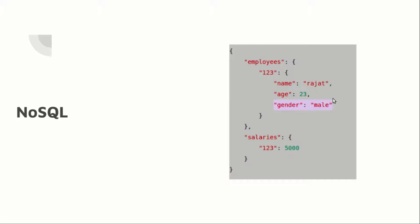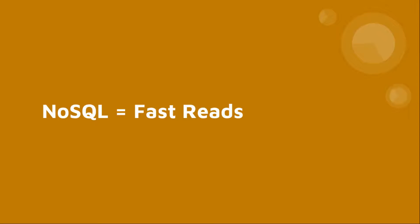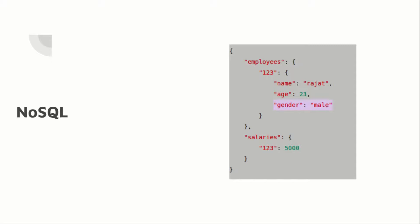In a NoSQL database we can put in as many records as we like into our data structure because there are no rules governing the types of data you can store. A gender field can be present in some records and absent in others — you can manage that kind of structure using NoSQL. Another advantage is fast reads: all data about employee 123 resides in one single path, so you can readily read that record and get all of the data.